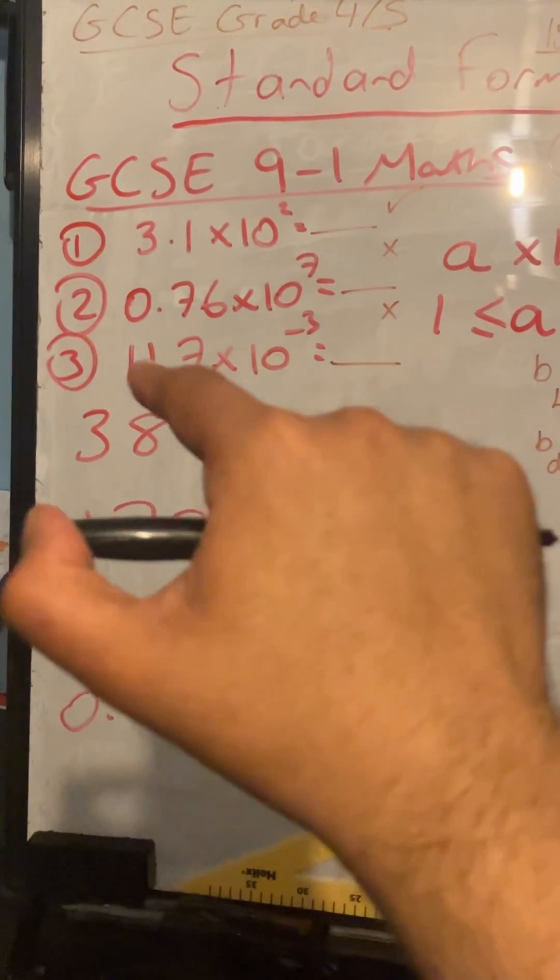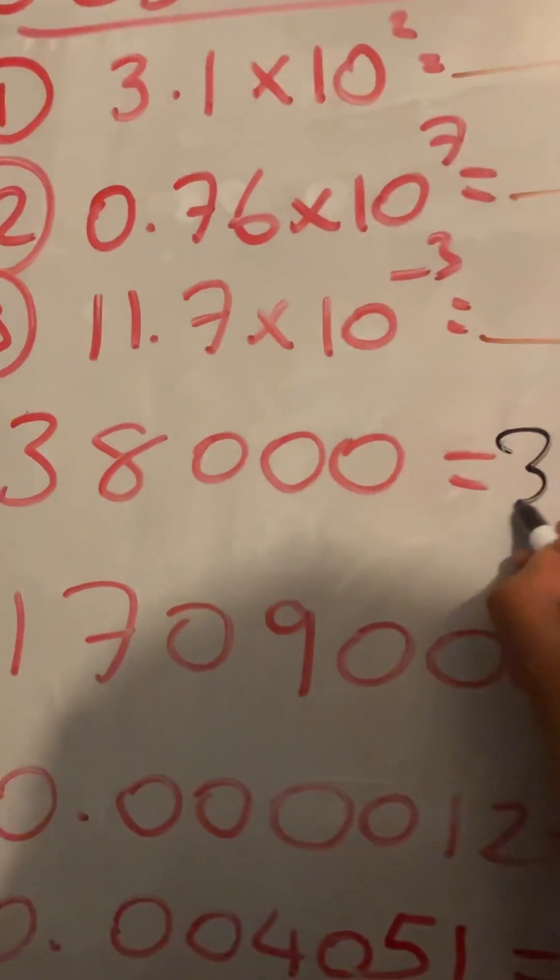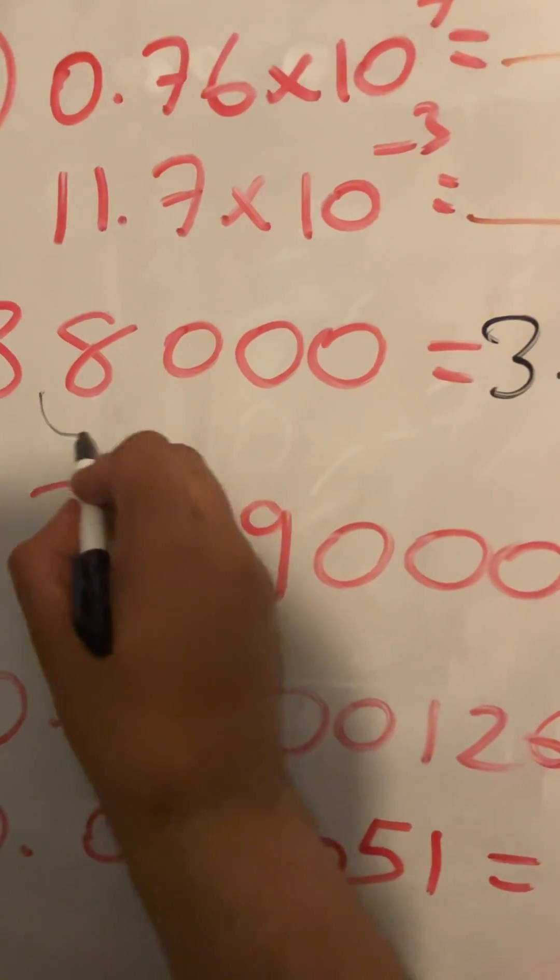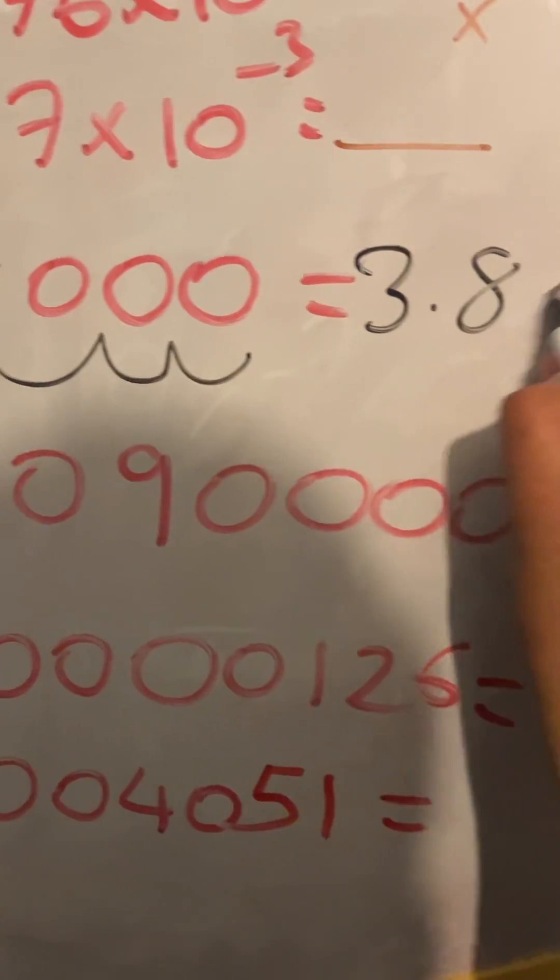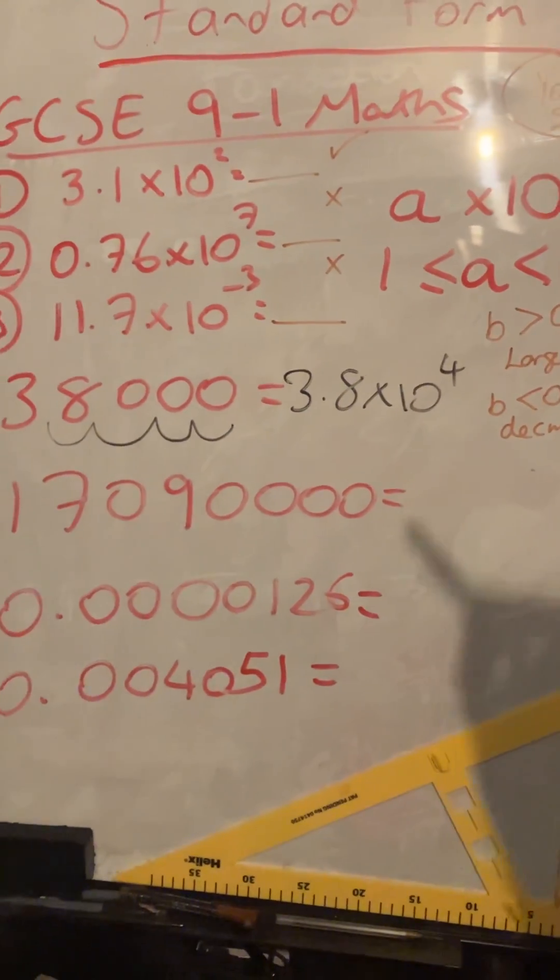Looking at this example, 38,000, well that's going to be 3.8, counting 1, 2, 3, 4 places, times 10 to the power of 4. If it's a positive power, it'll be power 4.